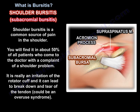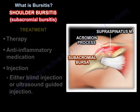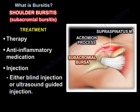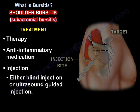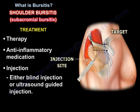Shoulder bursitis could be an overuse syndrome. The condition is often treated by therapy, anti-inflammatory medication, or by injection — either blind injection or ultrasound-guided injection.